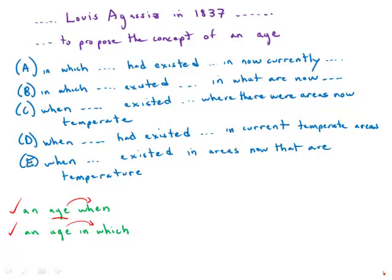Now we'll move on to the verb 'existed' versus 'had existed,' which flip-flops back and forth between these two forms. 'Had existed' is the past perfect, used to compare that action to some other action in the past — for example, 'Before I went to the store, I had gone to the movies.' We use it to place an action previous to another action in the past. Here, in the idea of an ice age, we're comparing the past to the present — areas now temperate where ice sheets once existed — so we are not comparing two past actions. Therefore, we do not need the past perfect; it is incorrect in this context. Choices A and D are out, and the simple past 'existed' is correct.